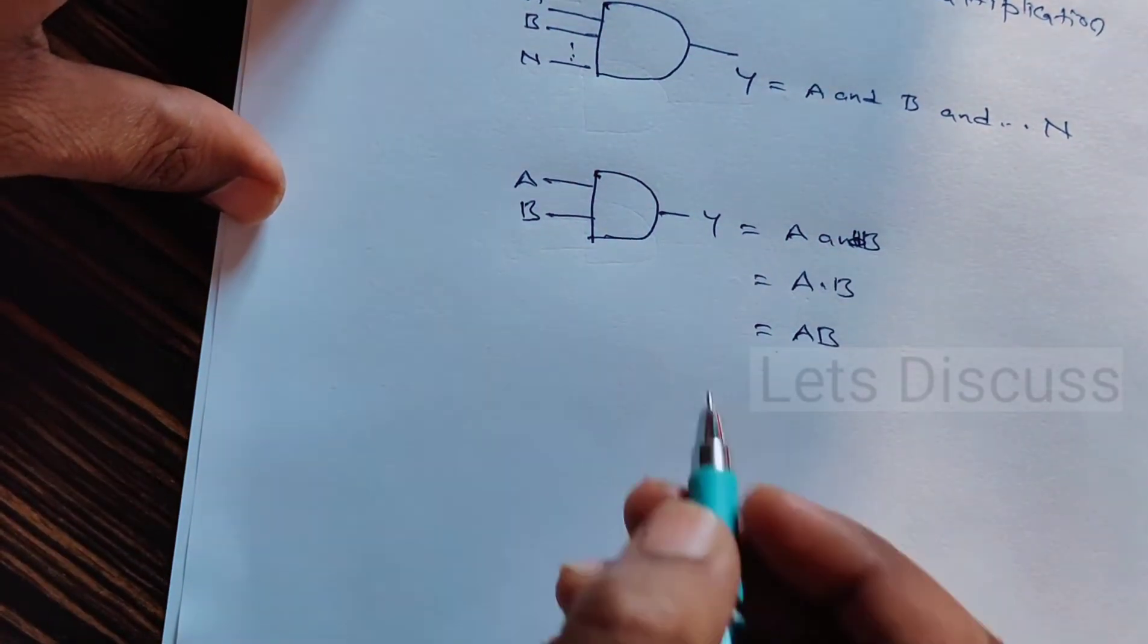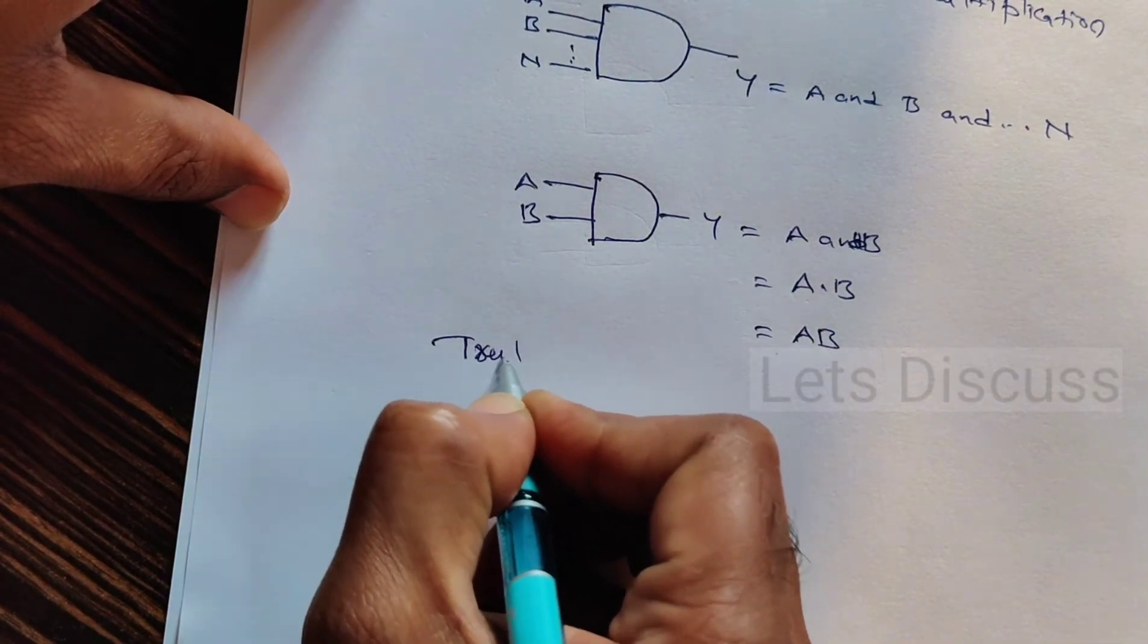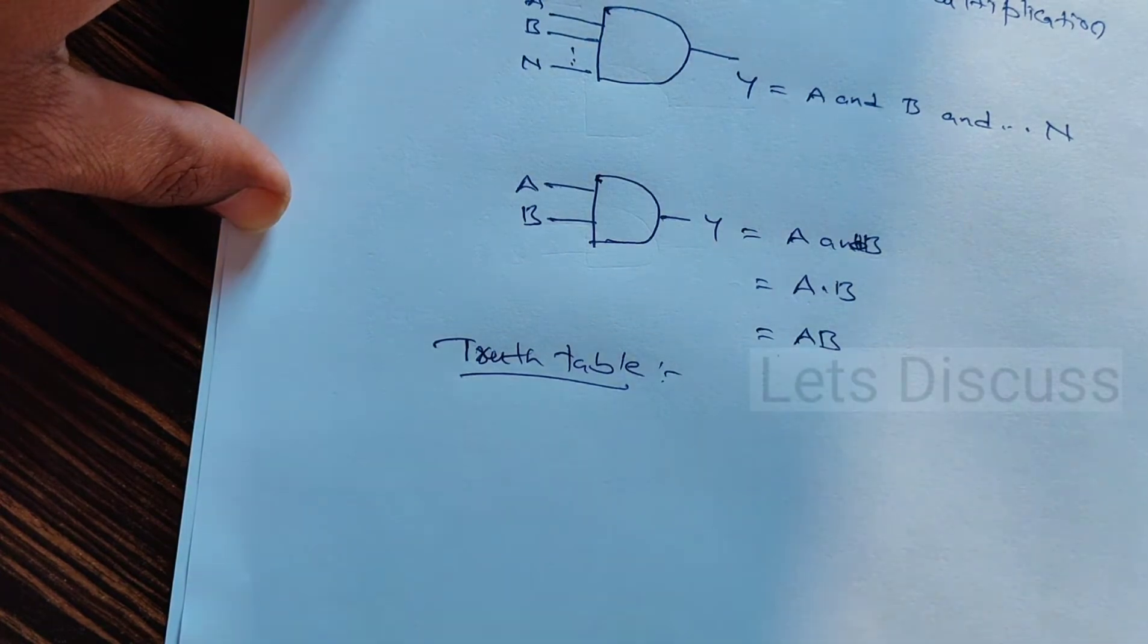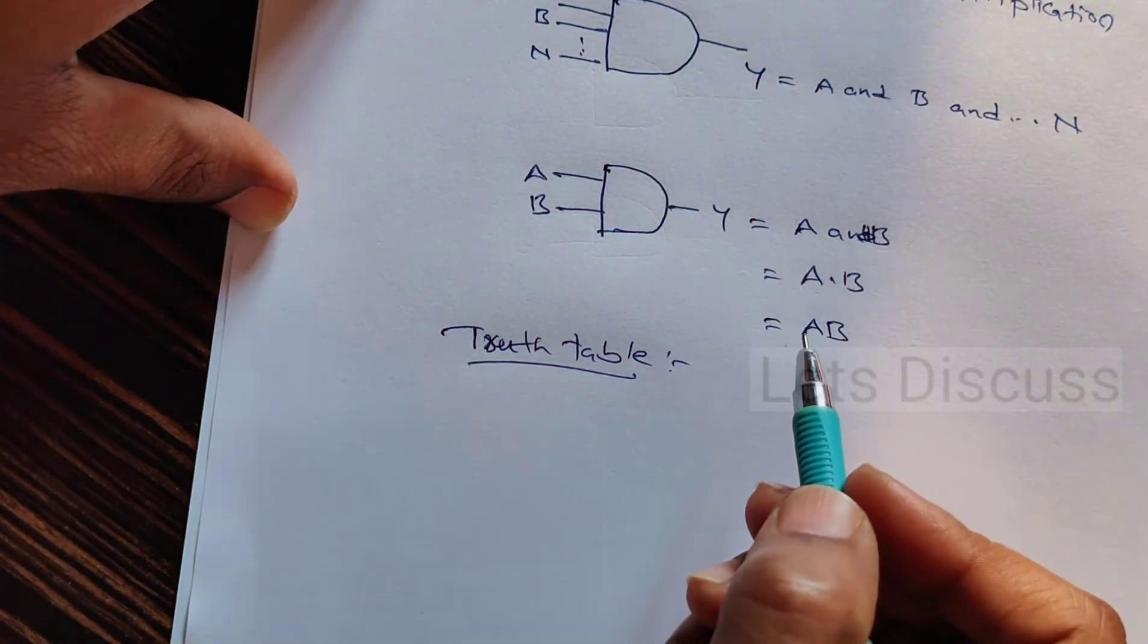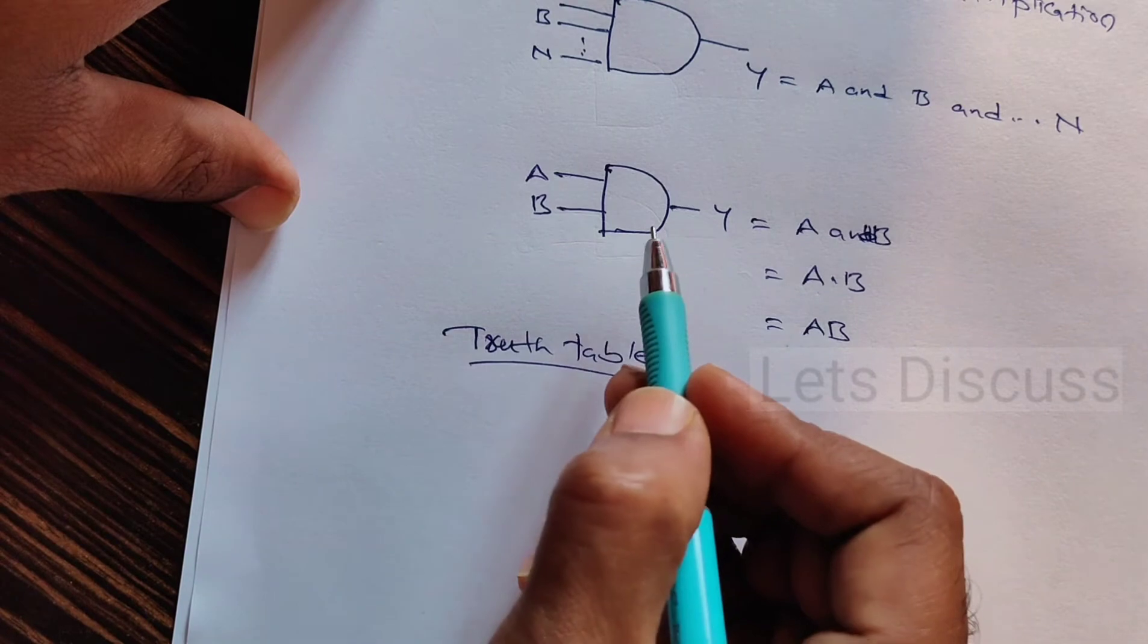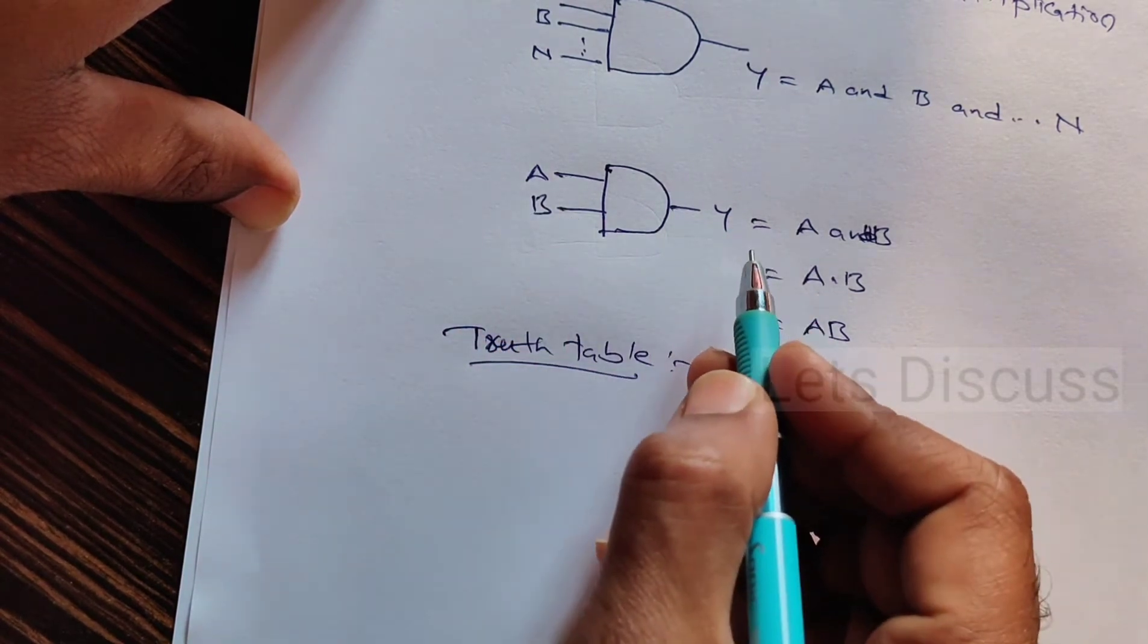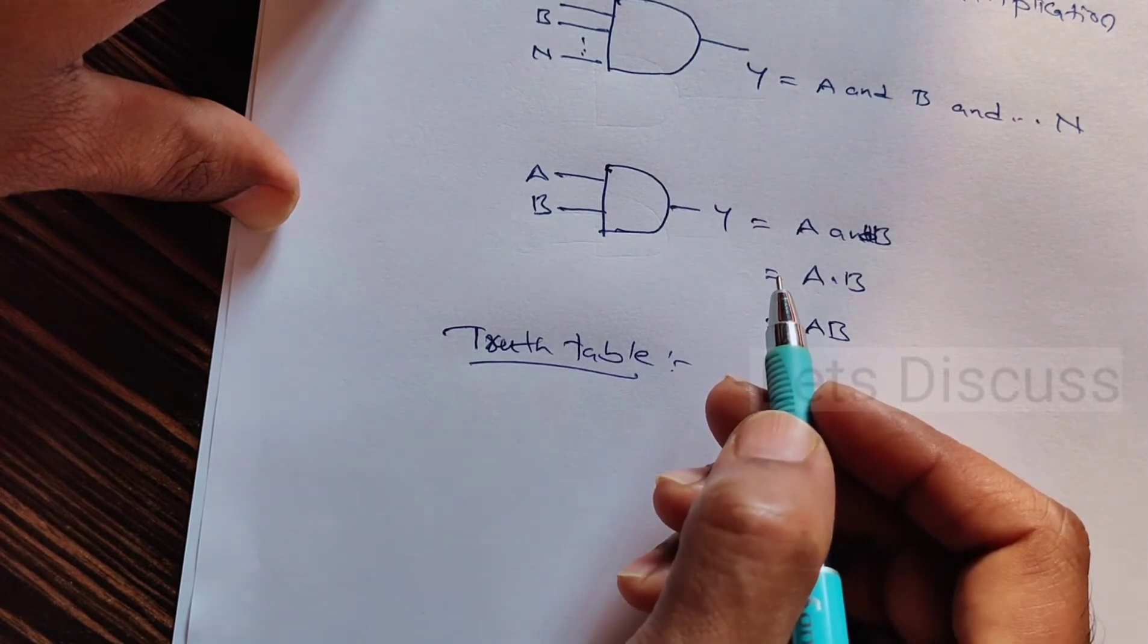Let us write the truth table for this. What is a truth table? The truth table is the output for different combinations of the input. When we provide some input to this AND gate, what is the output? That is considered as a truth table.